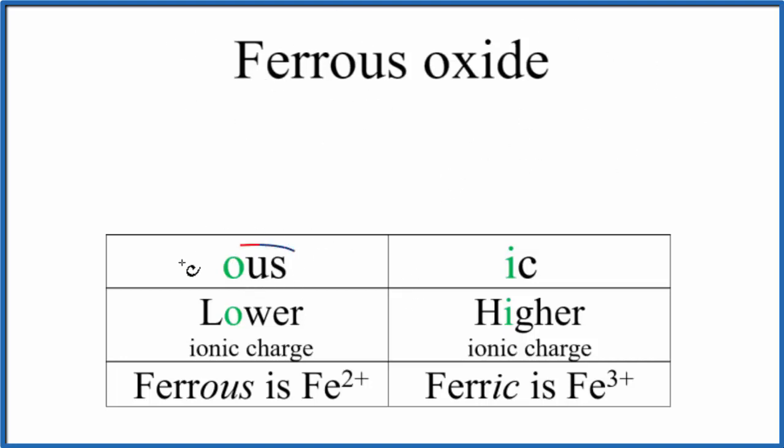In this naming system, if we have 'ous', that means we have the lower ionic charge. Ferrous refers to iron with a 2+ ionic charge (Fe2+). If it were 'ic', it would be a higher ionic charge, which would be Fe3+.